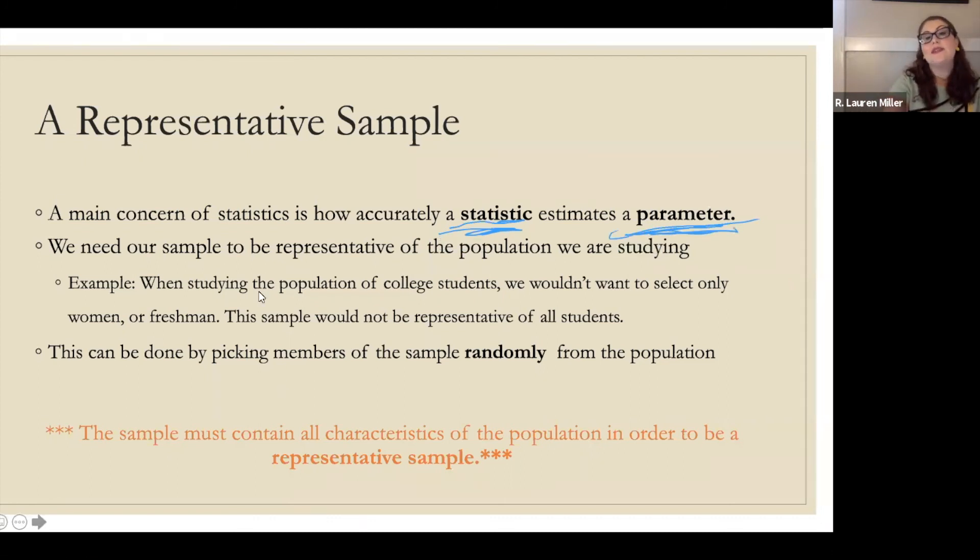When studying the population of college students, we wouldn't want to only select women or freshmen or just biology majors. That wouldn't be representative of all students. You can pick representative samples by picking members randomly from a population. We're going to go over sampling methods in section 1.2.